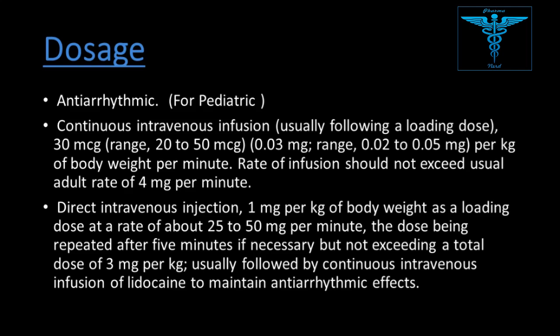For children under one year of age, continuous intravenous infusion following a loading dose: 30 mcg/kg/min (range 20 to 50 mcg/kg/min, or 0.02 to 0.05 mg/kg/min). Rate of infusion should not exceed the usual adult rate of 4 mg per minute. Direct IV injection loading dose: 1 mg/kg at a rate of 25 to 50 mg per minute, repeated after 5 minutes if necessary, not exceeding a total dose of 3 mg/kg, followed by continuous IV infusion to maintain anti-arrhythmic effects.